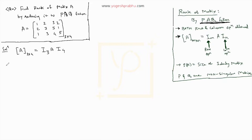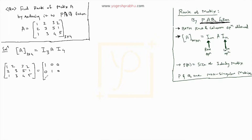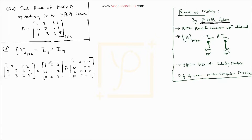In matrix form, A is going to be: first row 1 2 3 2, second row 2 3 5 1, and third row 1 3 4 5. Then I₃ is simply an identity matrix of size 3×3, which is the 3×3 identity. And I₄ is a 4×4 identity matrix: 1 0 0 0, 0 1 0 0, 0 0 1 0, 0 0 0 1.